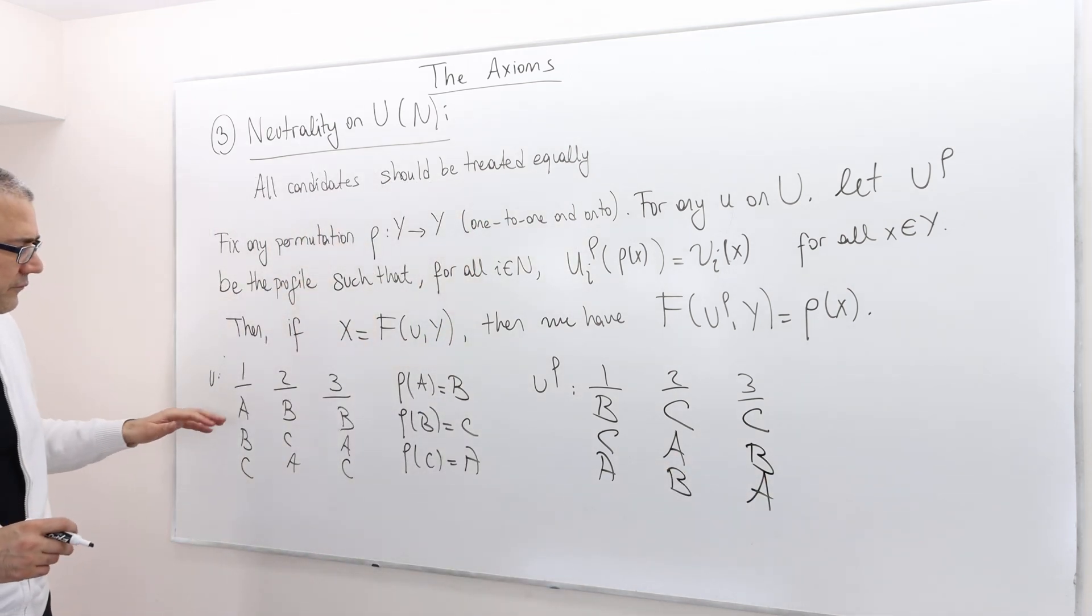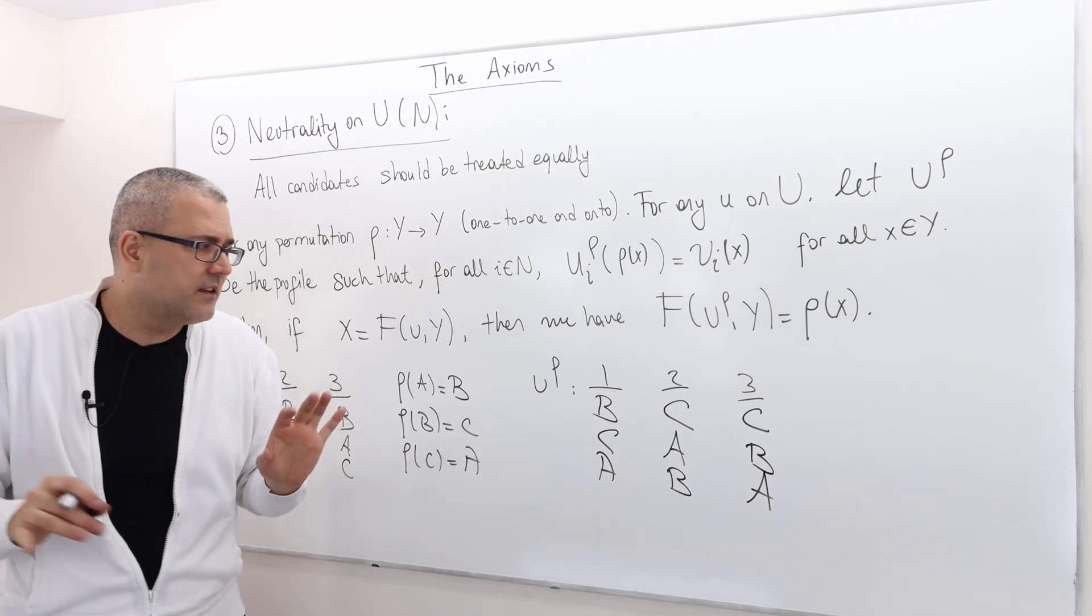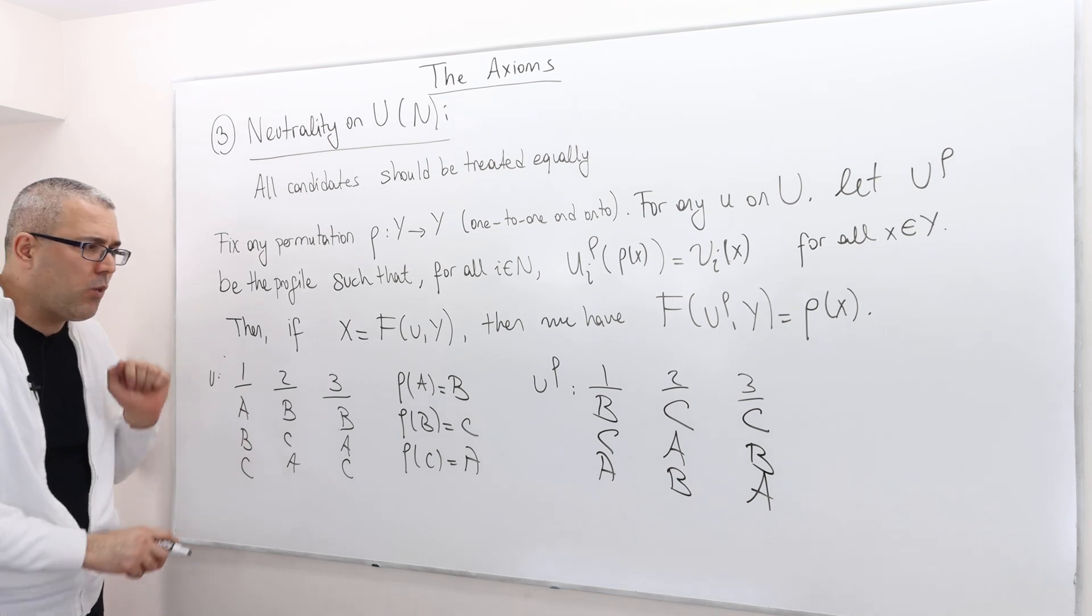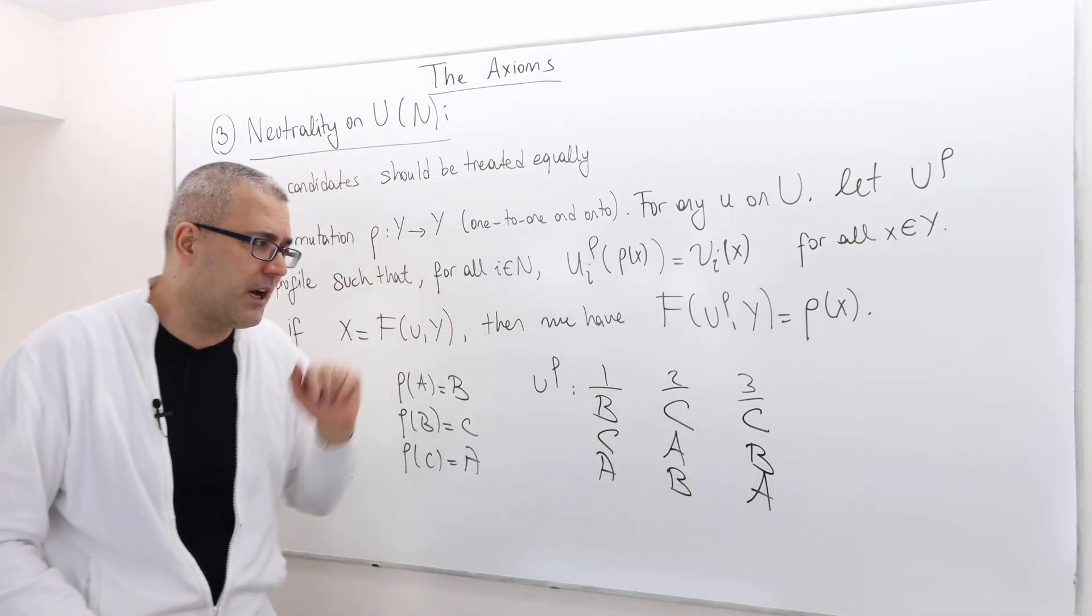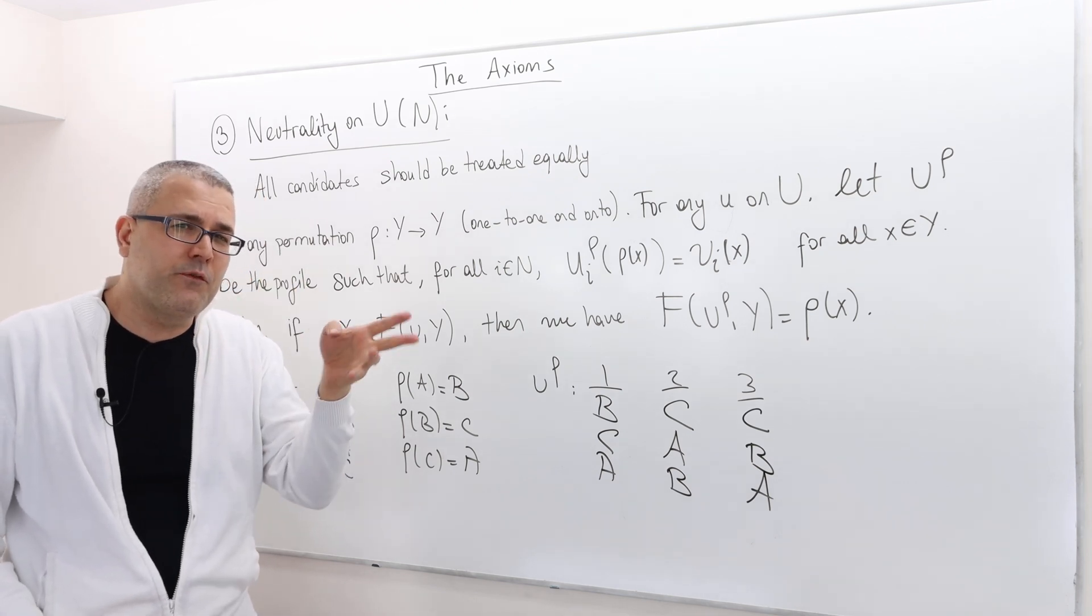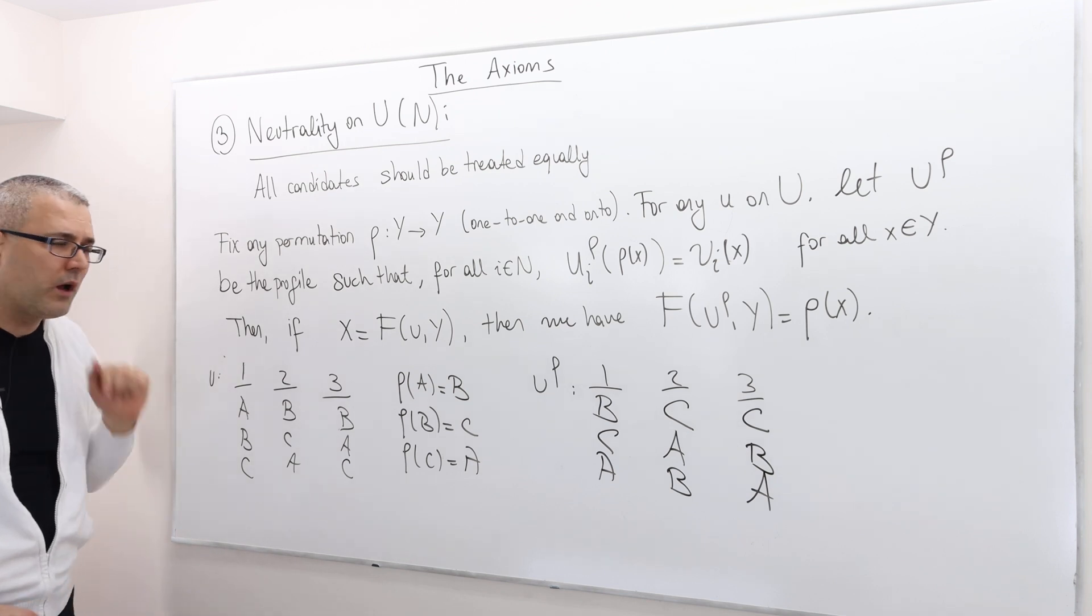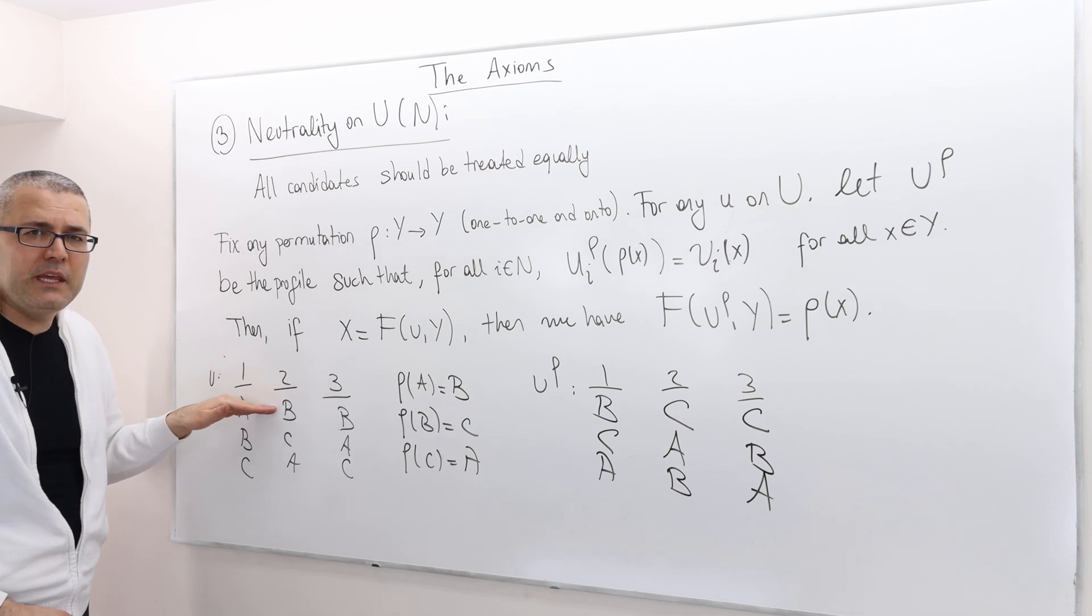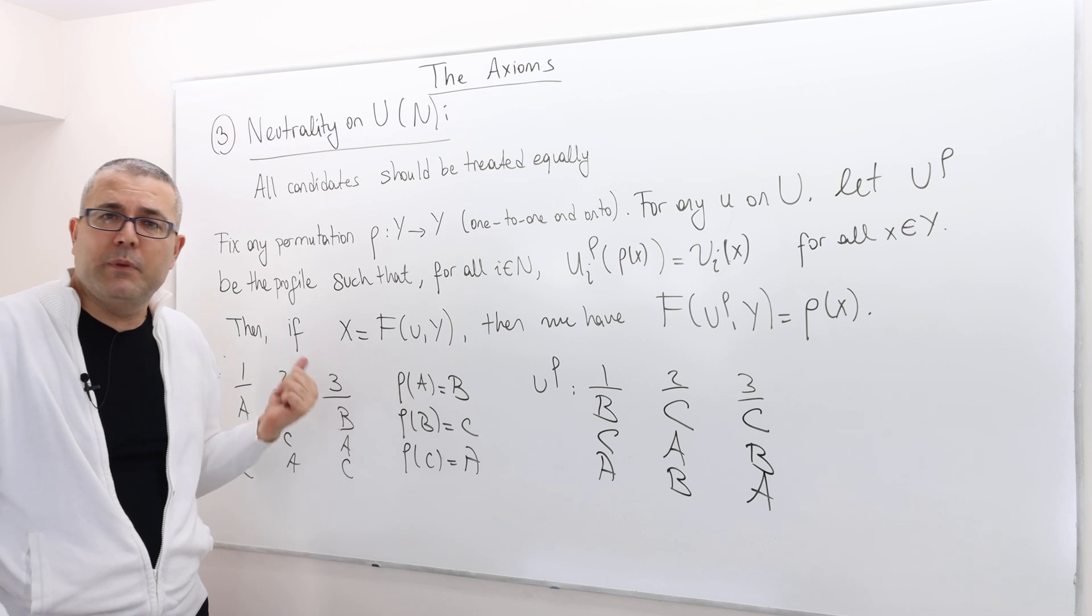If you look at it, this profile and this profile are not identical. Here, for example, B gets two votes, A gets only one vote at the top. Here, however, C gets top vote for two voters, and B gets only one vote. So, if we are going to apply plurality, for example, here B is the winner, here C is the winner, but remember,